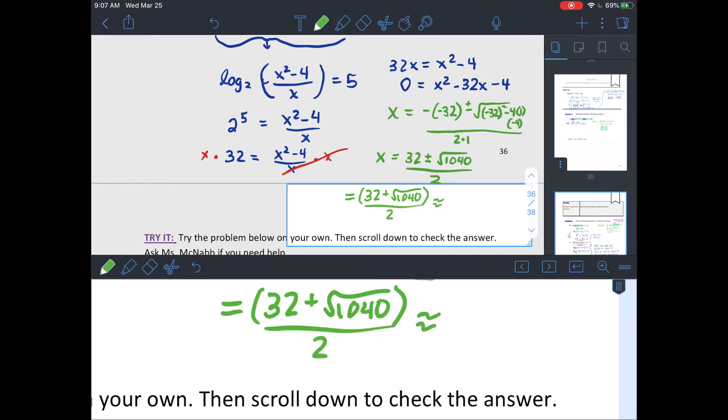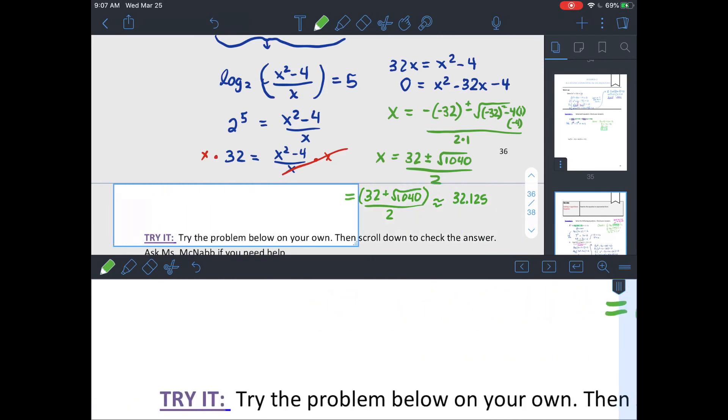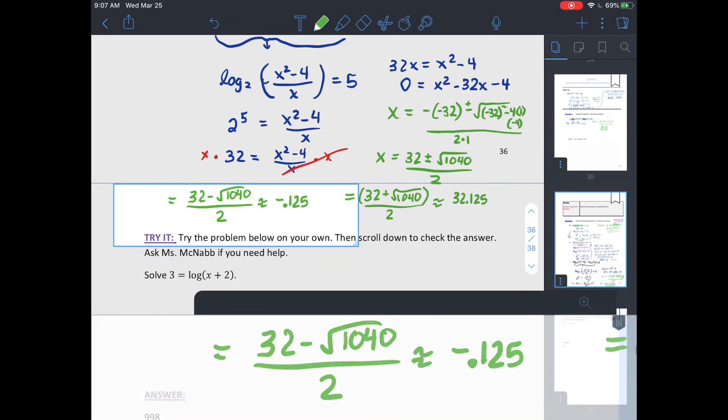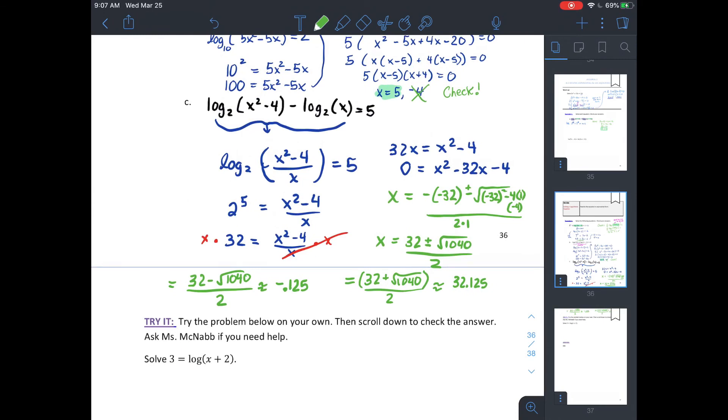Let's do the plus version first. If you punch that in a calculator, make sure to put the parentheses around the numerator. So that gives you approximately 32.125. If I do my negative version, just punch it into your calculator, you should get approximately negative 0.125. Check both of them in your original. If I check the negative 0.125 in that second part, log of 0.0125 is undefined. Cross that one off. 32 works.